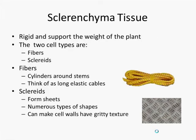Sclerenchyma tissue is rigid and contributes to supporting the weight of the plant. Two types of sclerenchyma tissue cells are fibers and sclereids. Fibers are sclerenchyma cells that form cylinders around stems for reinforcement. A good way to think of fibers are as long, elastic cables structurally supporting a plant.